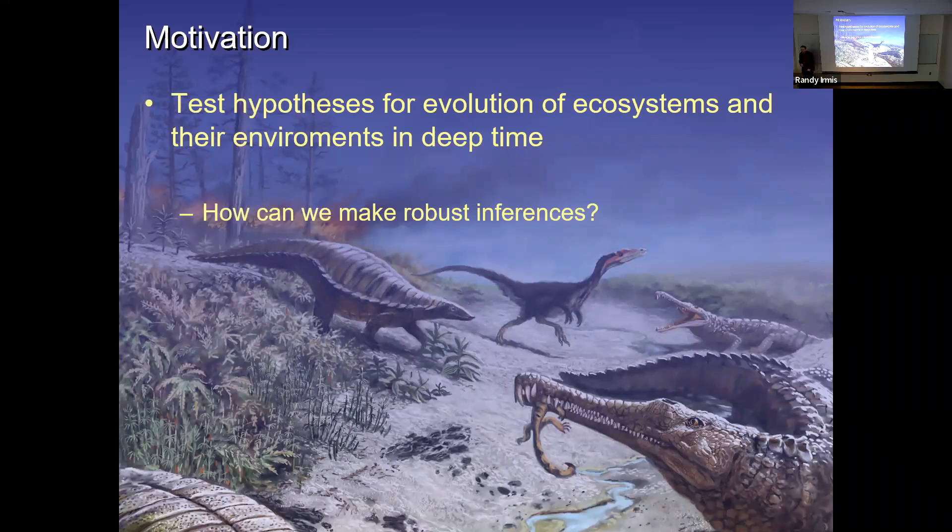And so in the end, I've sort of, sometimes it's a bit depressing, but I feel like a lot of my research has sort of gone towards understanding what are the limits of those inferences? And where are we over-interpreting or under-interpreting our data in deep time when it comes to both evolution of ecosystems and their context?